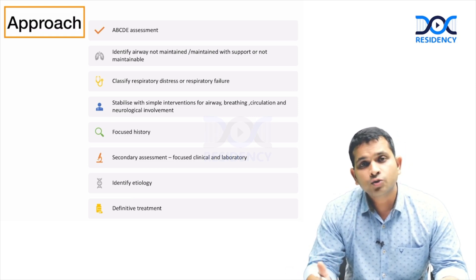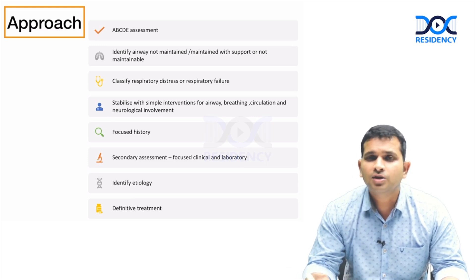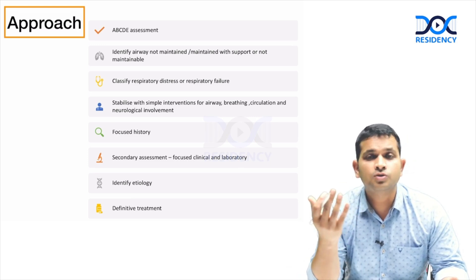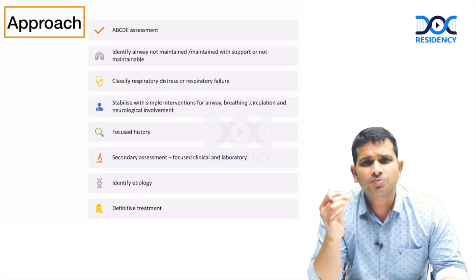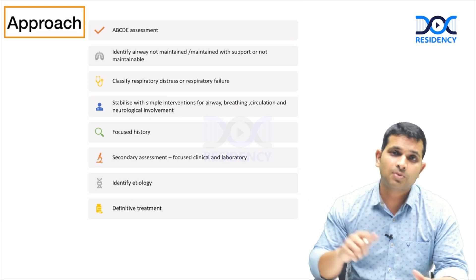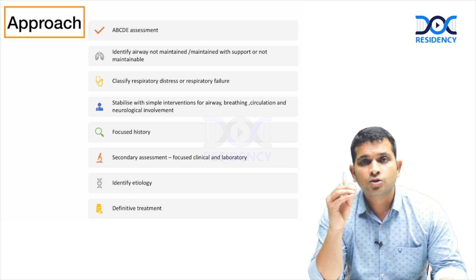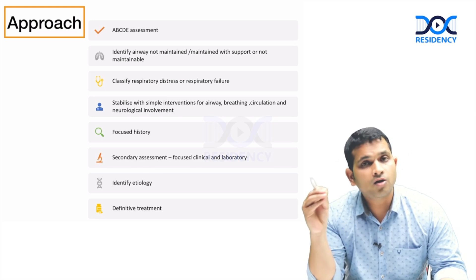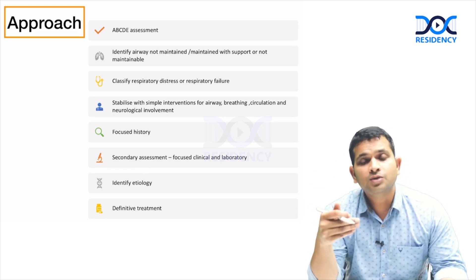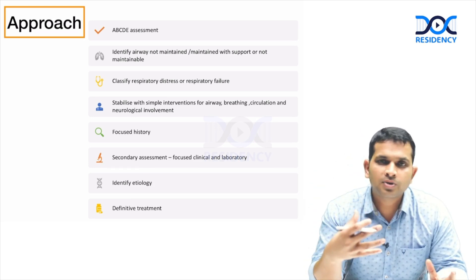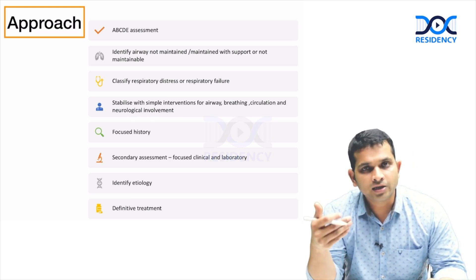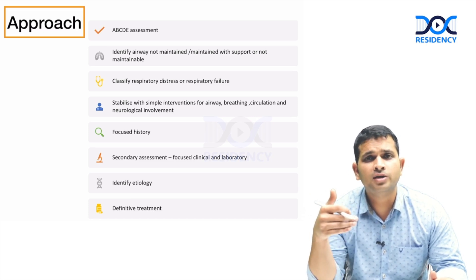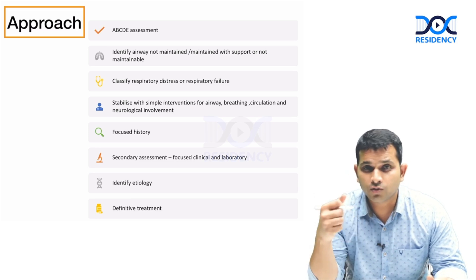Depending on severity, the intervention may be simple — for example, a child with work of breathing due to a blocked nose: just put in a catheter, do some suctioning, and the child is fine. Or it could be that you need bag-and-mask ventilation or a ventilator. You identify that and act accordingly. Then we take a focused history: how many days the child has had this, any history of foreign body ingestion, fever, cough and cold, family contacts — all revolving around the diagnosis.